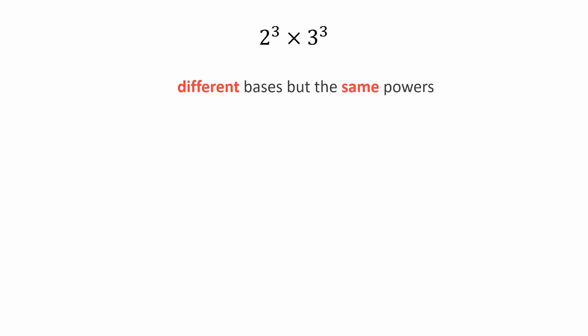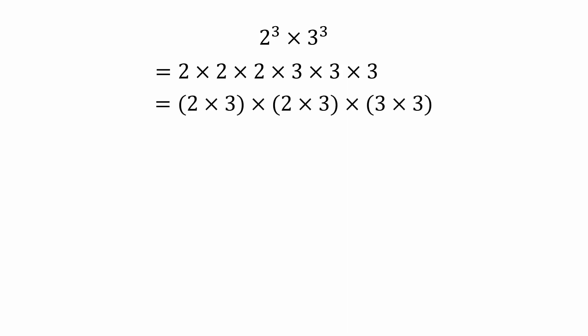When we simplify these numbers, we get this pattern. These numbers can be rearranged in such a way that 2 times 3 is multiplied by itself 3 times. This can be written as 2 times 3 whole raised to the power 3. We can further simplify it to get 216.